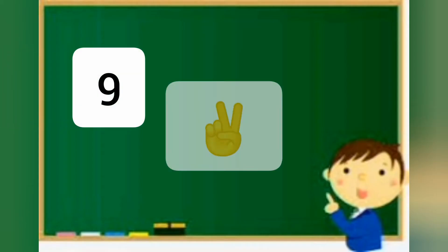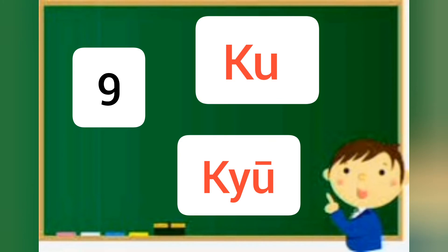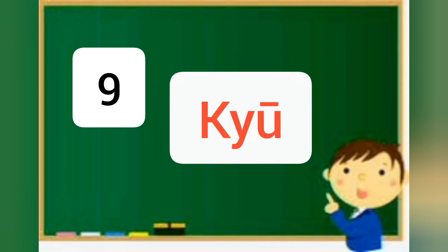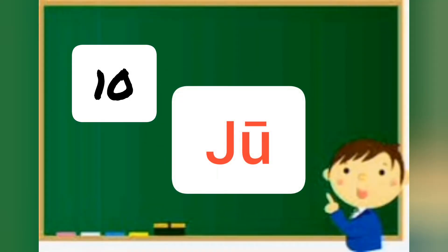For number nine, also we have two words: ku or kyu. We generally use kyu to count number nine. Next one, number 10, we call ju in Japanese. Number 10 is ju.